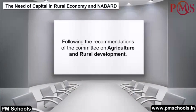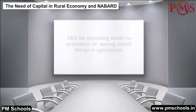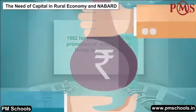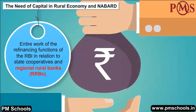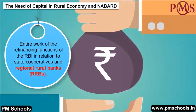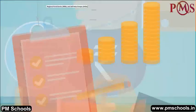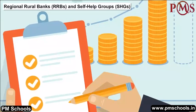Following the recommendations of the Committee on Agriculture and Rural Development, the National Bank of Agriculture and Rural Development, NABARD, was set up in 1982 for providing credit for promotion of agriculture, among other things. It took over the entire refinancing functions of the RBI in relation to state cooperatives, Regional Rural Banks (RRBs), and Self-Help Groups (SHGs).